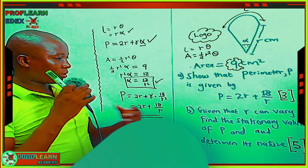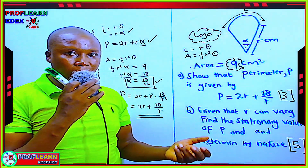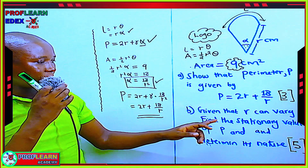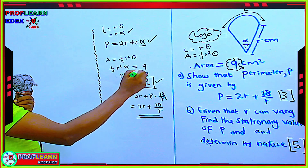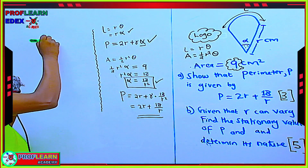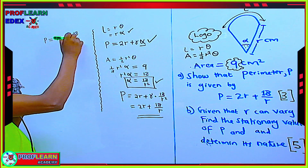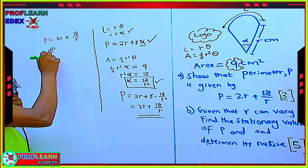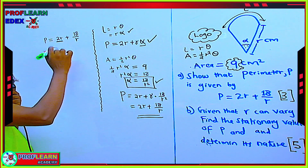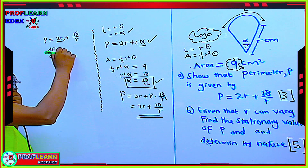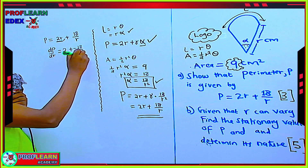Now for the next part: given that R can vary, find the stationary value. At the stationary point, dP/dR equals 0. So we are going to find the derivative of P equals 2R plus 18 over R. Differentiating gives dP/dR equals 2 plus negative 18 over R squared.